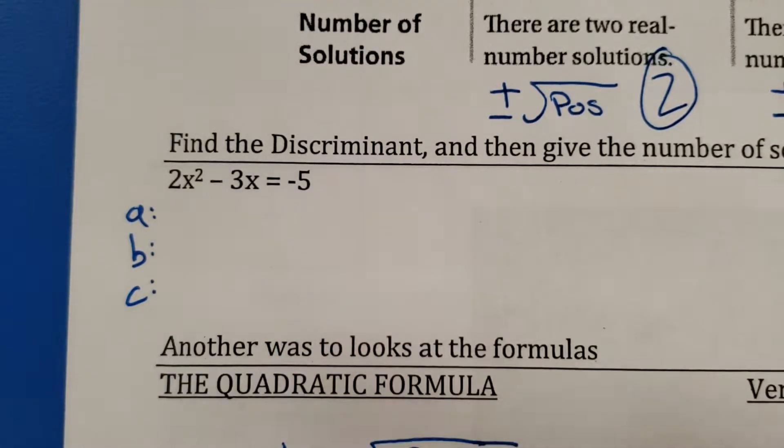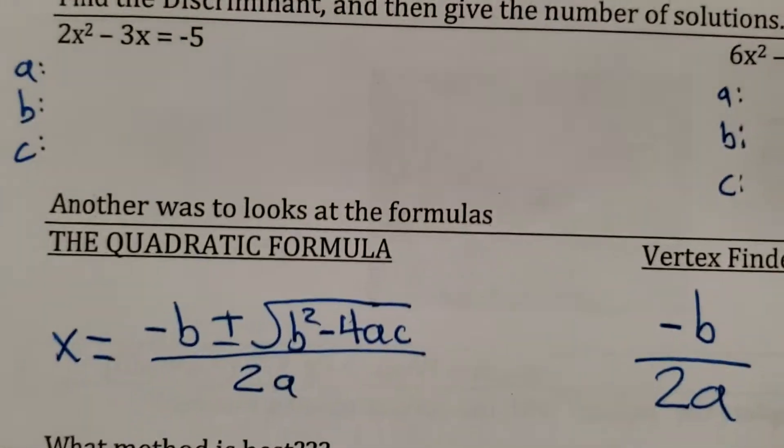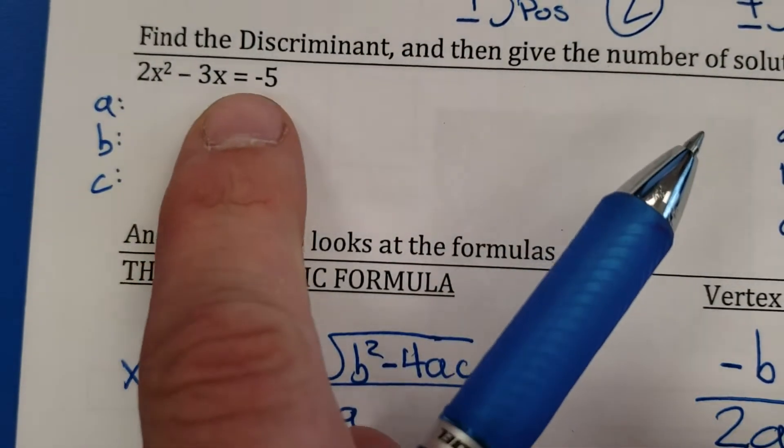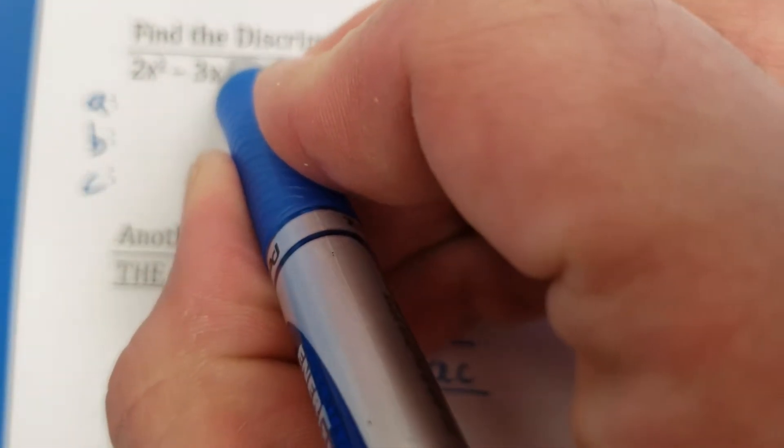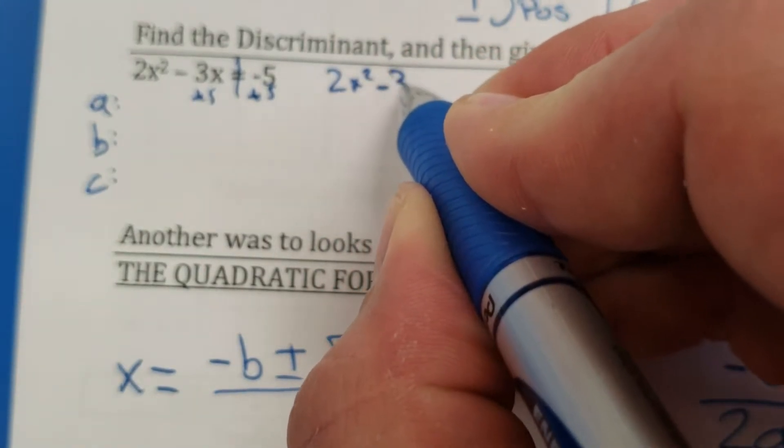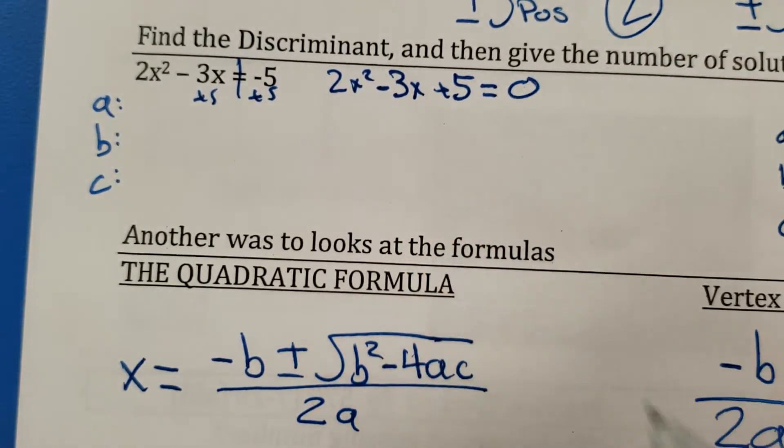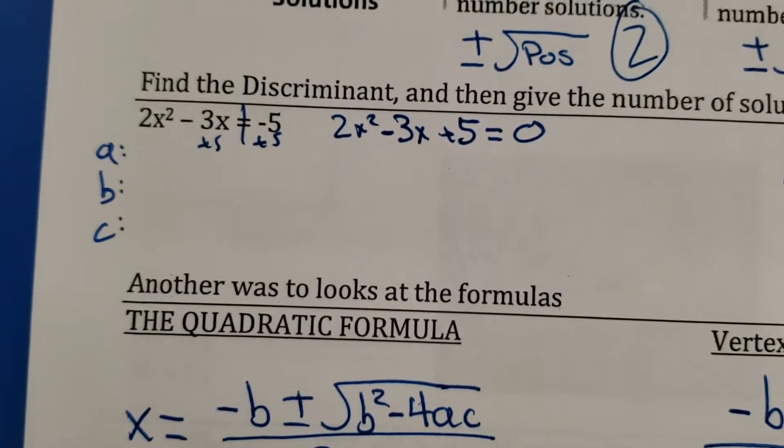Okay, so remember the formula says you can't do anything until it's equal to zero. So this first one actually requires a little bit of rewrite. I can't do anything until it's equal to zero. Okay, so I'm going to add 5, add 5, 2x squared minus 3x plus 5 equals 0. Okay, now I can do the formula.